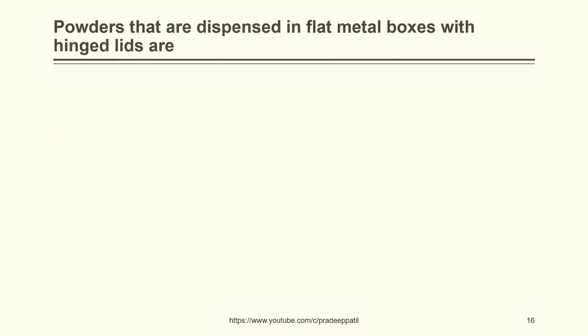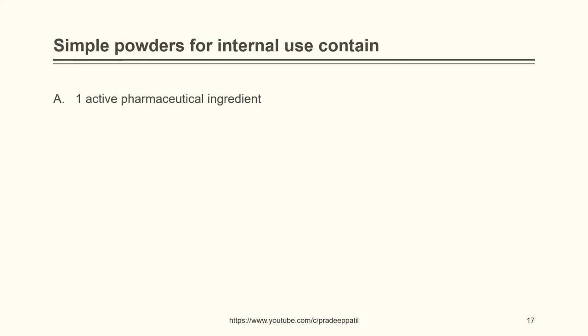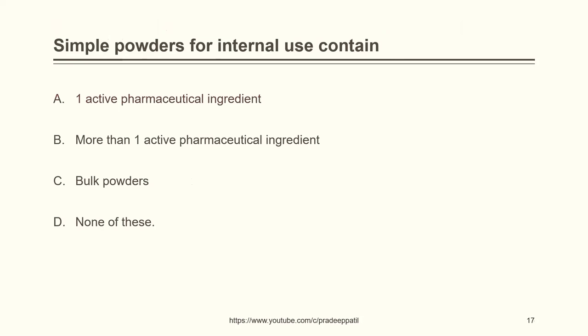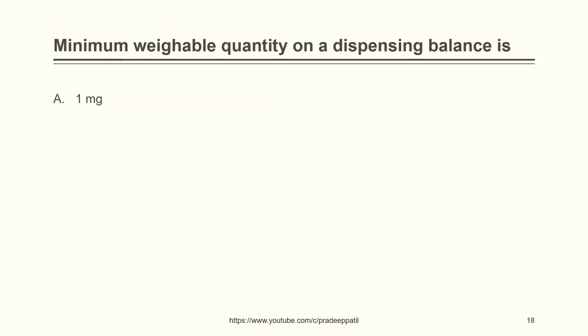Powders dispensed in flat metal boxes with Heinz lids are: snuffs, dentifrices, effervescent granules, or none of these. The correct answer is snuffs. Simple powders for internal use contain: one active pharmaceutical ingredient, more than one active pharmaceutical ingredient, bulk powder, or none of these. Minimum weighable quantity on a dispensing balance is: 1 mg, 10 mg, 100 mg, or 1 gram. Since we are talking about a dispensing balance — not a digital balance — it cannot weigh anything accurately below 100 mg. So the correct answer is 100 mg.